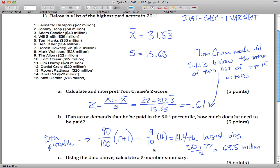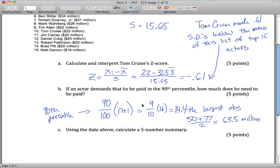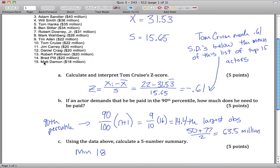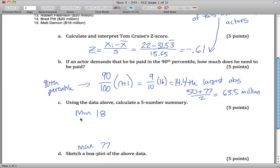Using the above data, calculate a five number summary. We can do that. The min is 18, the max is 77, and Q1, median, and Q3 we can find by these formulas respectively.